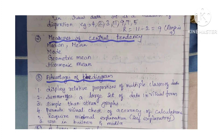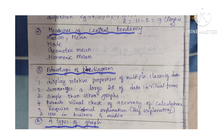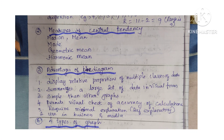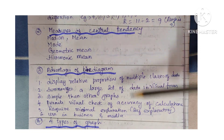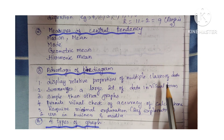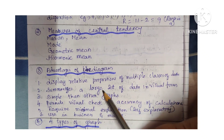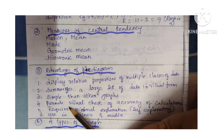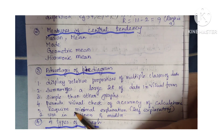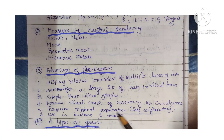Next is advantages of pie diagram. I have given 6 advantages — at least we are expecting 4 advantages. For 2 marks, each advantage is worth half a mark, so if you write 6 that's well and good. Advantages: it displays relative proportion of multiple classes of data; it summarizes a large set of data in visual form; it is simpler than other forms of graphs; it permits visual check of accuracy of calculations; it requires minimal explanation and is self-explanatory; it is used in business and mass media.